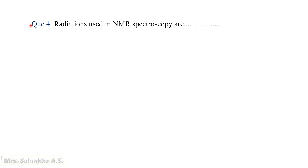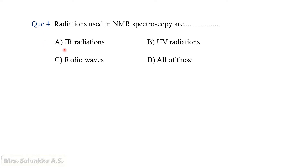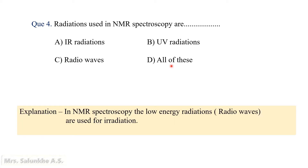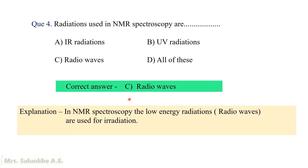Question 4: The radiations used in NMR spectroscopy are — infrared radiations, radio waves, or all of these? In case of NMR spectroscopy, the irradiated light used is of low energy. Therefore, radio waves are used for irradiation. Thus, the correct answer is radio waves.